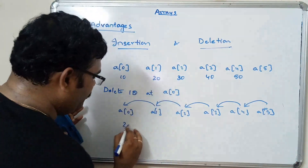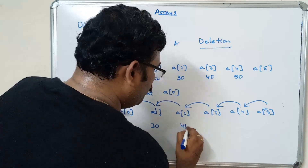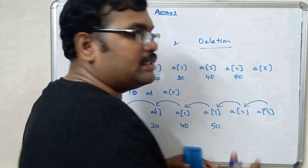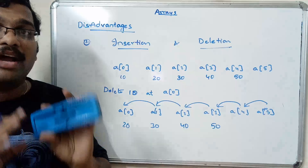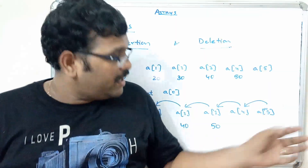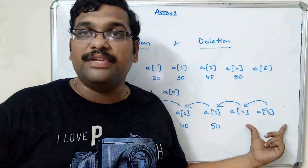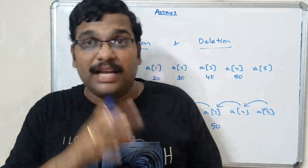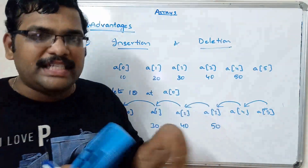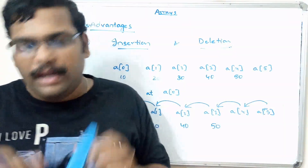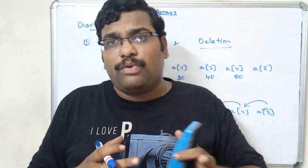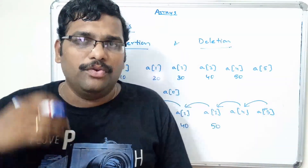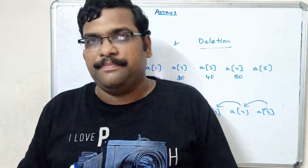Similarly for deletion, elements need to be moved towards the left. For example, 20 moves to one position, 30 moves to the next position. We are not deleting the memory — just moving the elements. The memory occupied by the last index is wasted. Due to these disadvantages, we do not implement the list concept using arrays — instead we use linked lists.